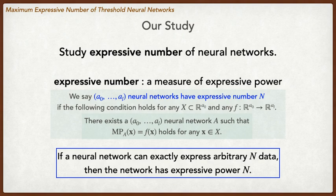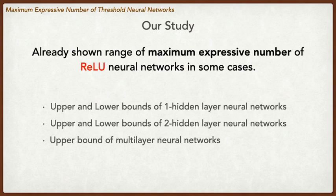In machine learning, if the number of training data is less than the expressive number of a neural network, we can see the size of the network is large enough to train the data before learning. In our previous study, we have shown the range of the expressive numbers of neural networks.